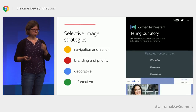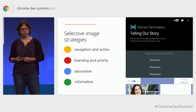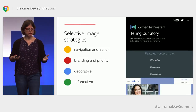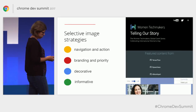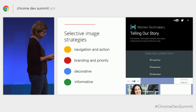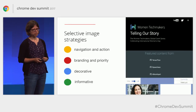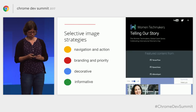So these are four selective image strategies. Depending on your site, there might be many more, so you just need to look carefully at the content of your site and see what's best for you.